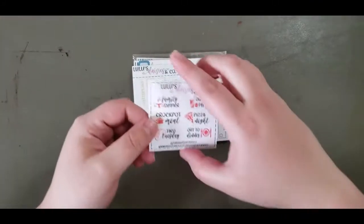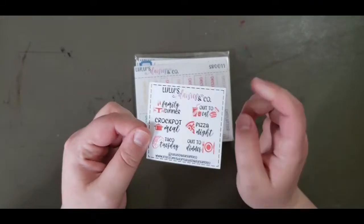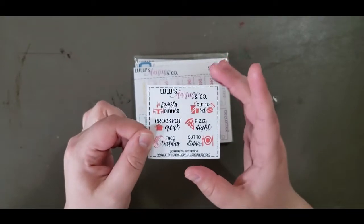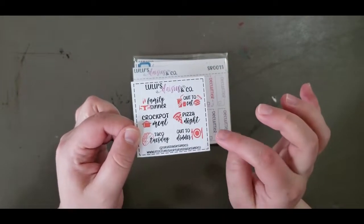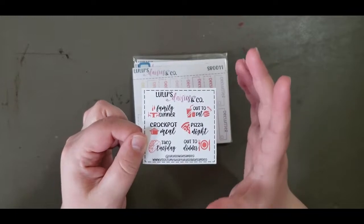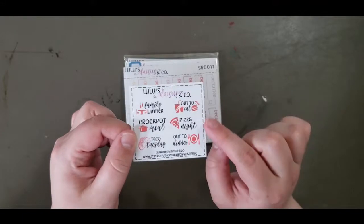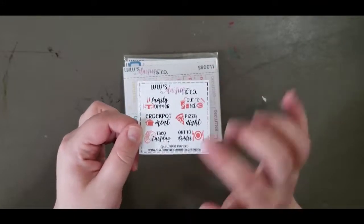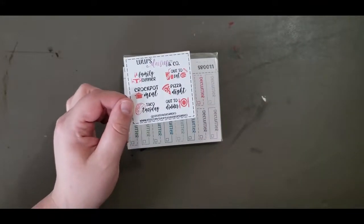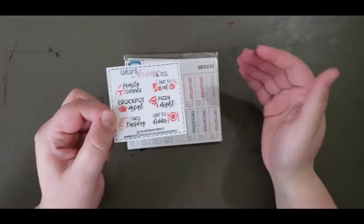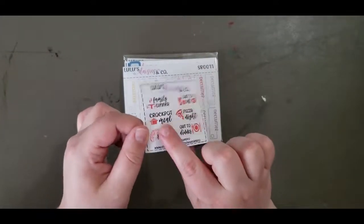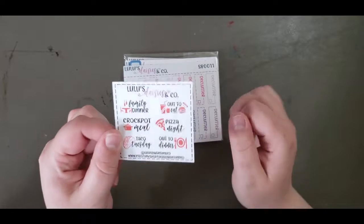To start off with, we have the freebie which is the same size as her last one and another really good selection of stickers. These ones are all food themed but I really like especially the crockpot meal or taco Tuesday. I really like these stickers and I like how they're all in one color so you could use them across multiple spreads or all in one spread if you wanted to, and I might have to go back and see if I can find that crockpot meal sticker.